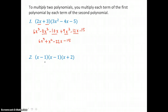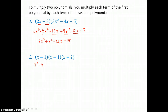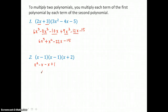In the second example, we're multiplying three binomials together. We can only multiply two binomials at once, so we'll start with the first two. x times x is x squared. x times negative 1 is negative 1x. Then negative 1 times x is negative 1x. And negative 1 times negative 1 is positive 1. So adding our like terms in the middle, this trinomial is x squared minus 2x plus 1.